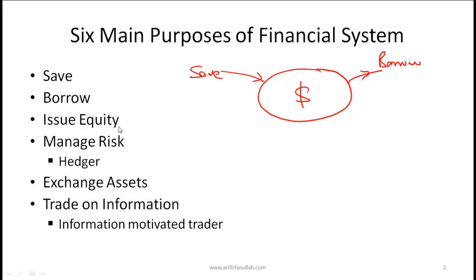A related point is that the financial system allows entities to issue equity. A company that wants to raise money issues shares, and by doing so it raises money while those who contribute also become part owners or shareholders. The financial system can also be used to manage risk through several derivatives such as forwards and futures that allow individuals as well as organizations to manage their risk.